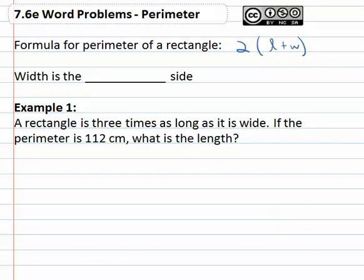Also an important vocabulary point: width is always the short side, length is the long side. So if we're asked for the width, we're asked to find the short side. If we're asked for the length, we're asked to find the long side.